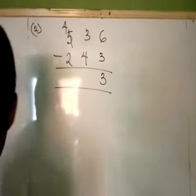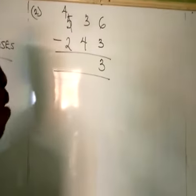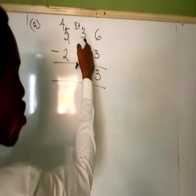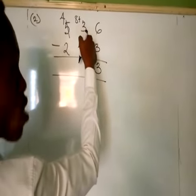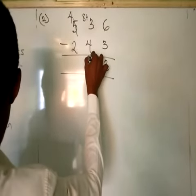That 1 you borrow, what is the base we are dealing with? 8. That 1 becomes 8. Then you add the 8 to this 3. 8 plus 3 will give me what? 11. 11 take away 4 will give me 7.